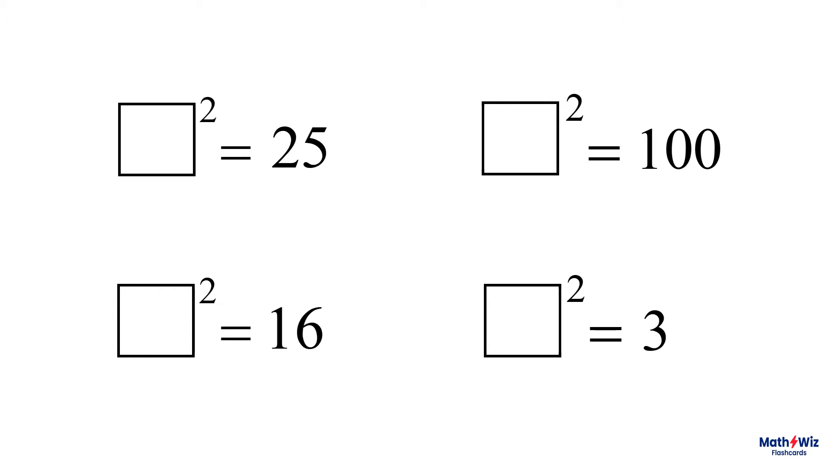A quantity squared equals 25, or 100, or 16, or 3. 25, 100, and 16 are called perfect squares, and 5, 10, and 4 are obvious solutions. 3 is not a perfect square, but the square root of 3 is a solution here.